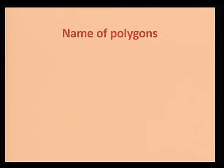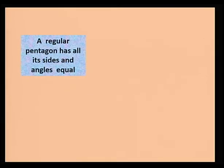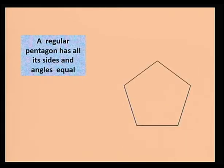Let's move on to polygons with five sides. A polygon with five sides is called a pentagon. This is the figure of a pentagon. If all the sides and angles of the pentagon are equal, we call it a regular pentagon — all the sides are equal and the angles too.